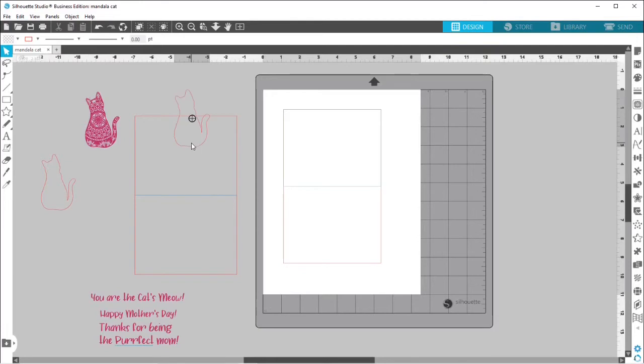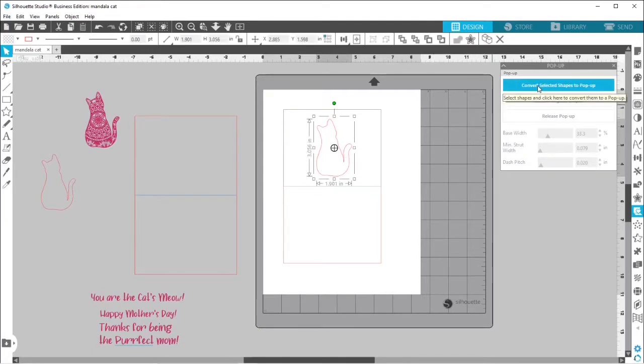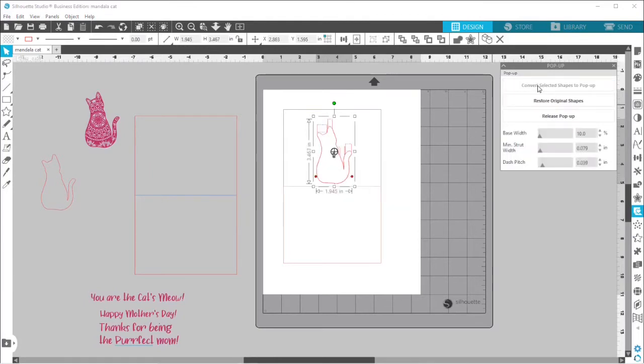I'm going to pull this offset onto my page here. And then I'm going to open up the card pop-up panel. And then if you click on the part that you want to pop-up and then click convert selected shapes to pop-up. Sometimes that takes a minute depending on what design you're using. And then you can see we've got all these little pieces here. Let's zoom in.